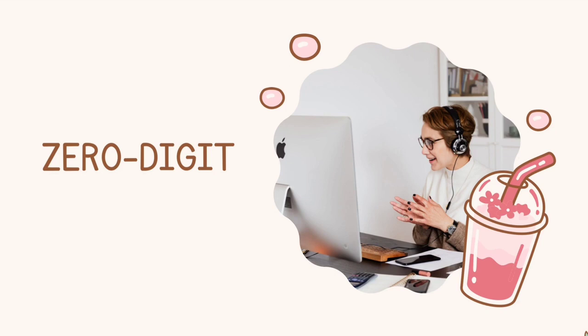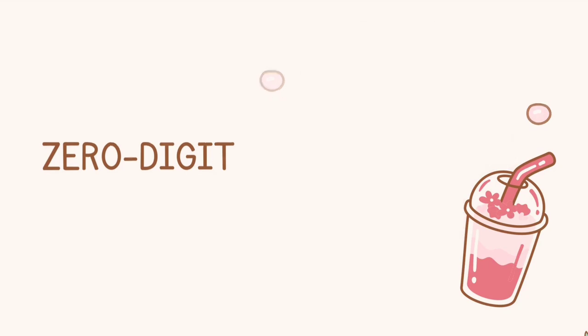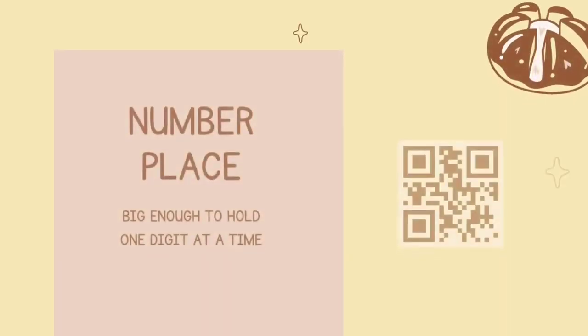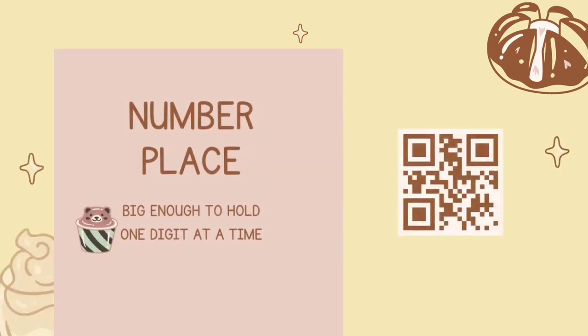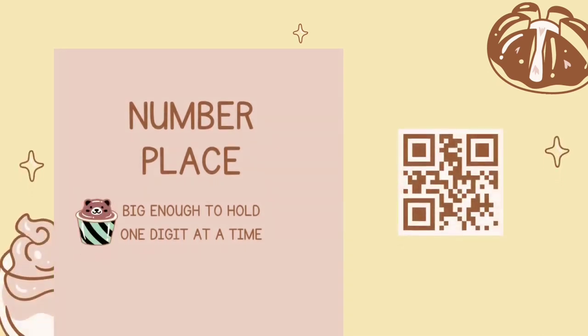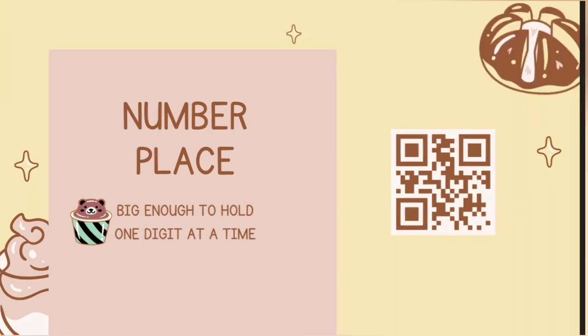To see how our number system uses these digits to represent amounts, let's pretend that we have an apple orchard full of apple trees, and each of these trees is loaded with red apples that we need to pick and then count for our records. We are going to use something called a number place to count.